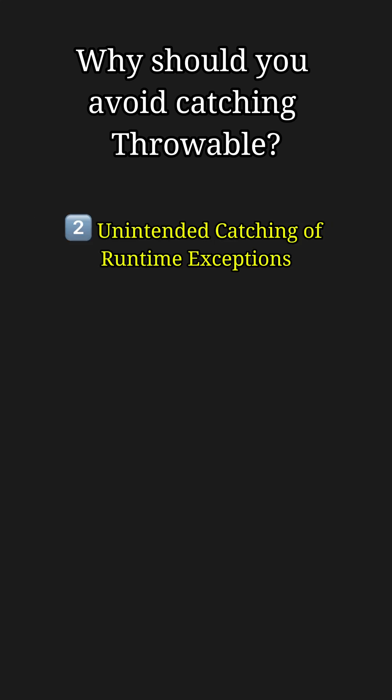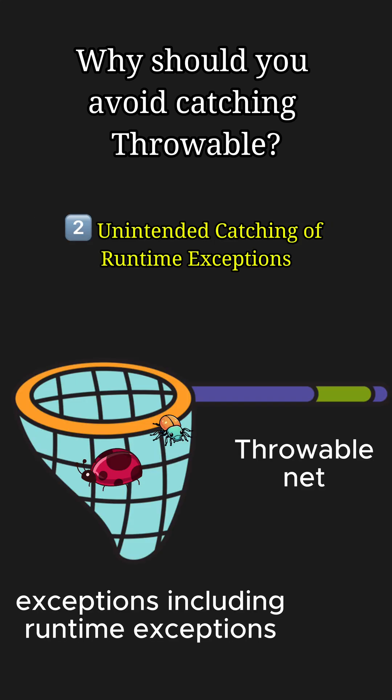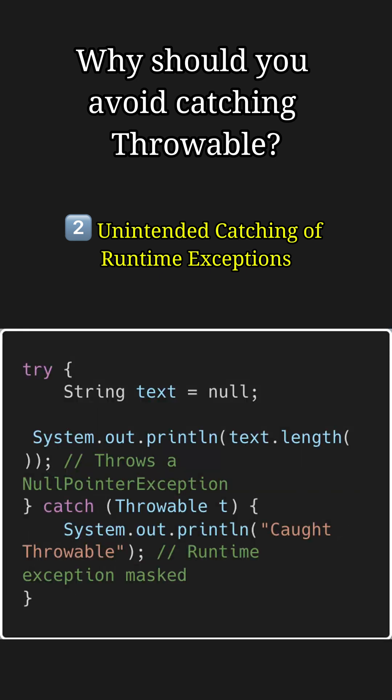The second reason to avoid catching Throwable is unintended catching of runtime exceptions like NullPointerException or IndexOutOfBoundsException. This can lead to masking bugs in the code and making debugging hard. For example, here the text is null, so if we try to get its length it will result in a NullPointerException, but it is caught as Throwable, so its origin might get lost and debugging may become more challenging.